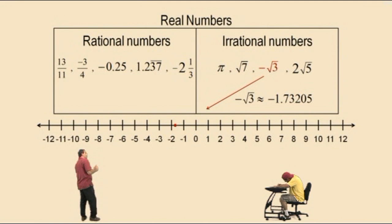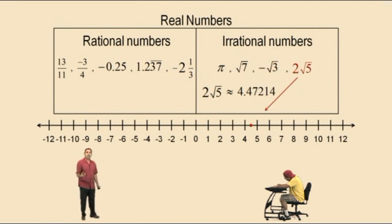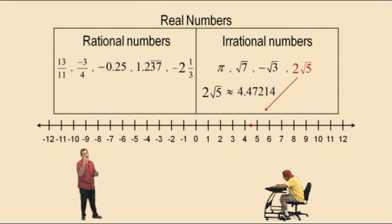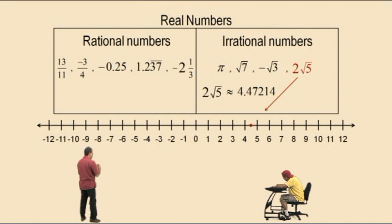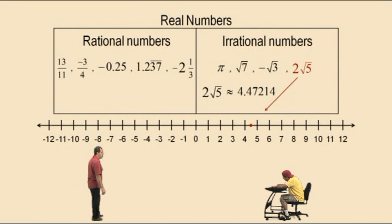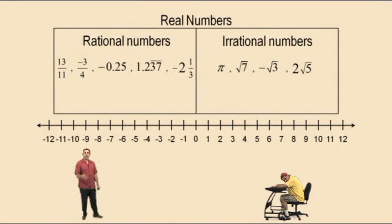And finally, 2 square roots of 5 means 2 times the square root of 5. You must follow the order of operations — first calculate the square root of 5, then multiply by 2. When you do that, you get about 4.47214, which is about over there. So that's a little talk about the real number system. I hope you enjoyed that, and we'll see you again soon.